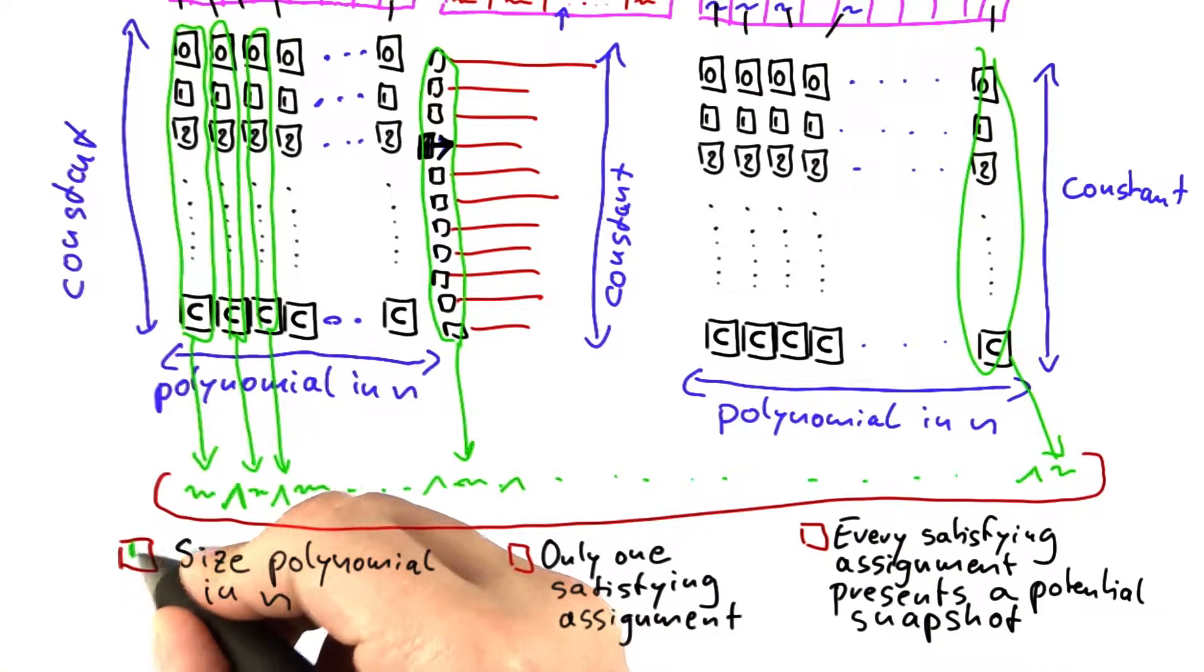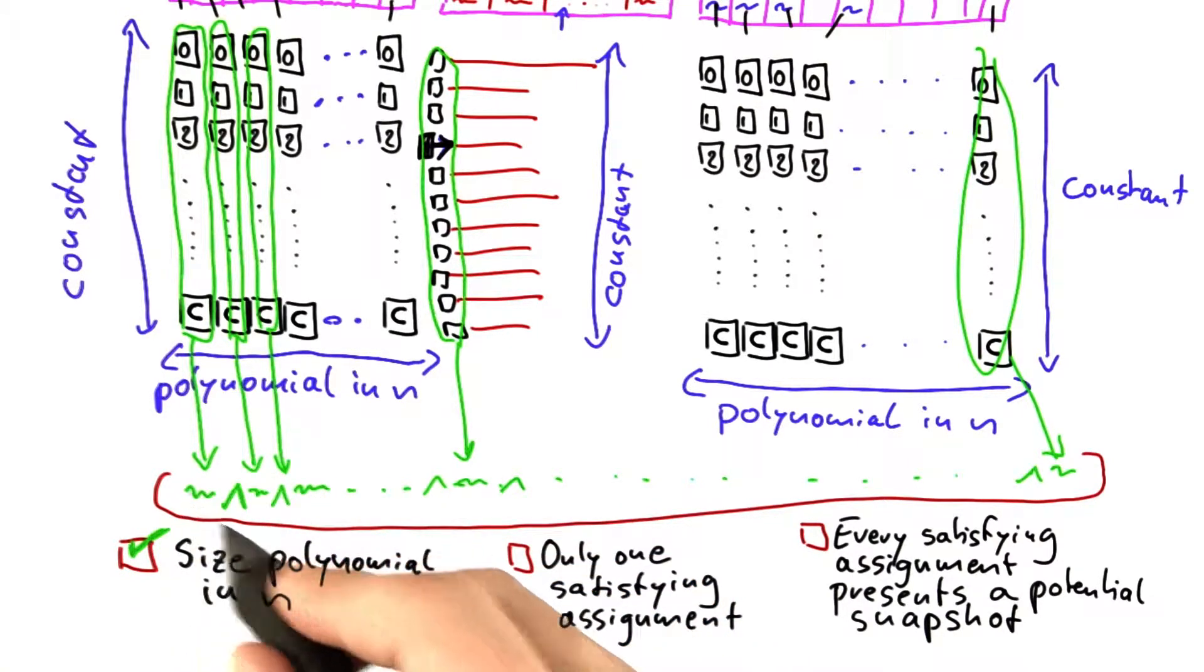And there's two correct answers here. The first one is that the size of this huge Boolean formula here is polynomial in n, and I will show you why.